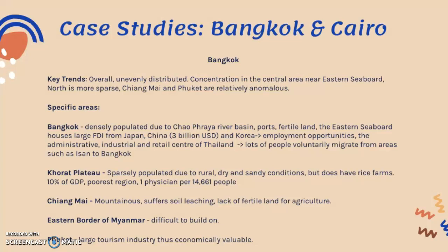Looking northeast of Thailand, you see the Khorat Plateau, which is sparsely populated due to its rural, dry, and sandy conditions. Although it does have rice farms, these provide a low income compared to the tertiary sector jobs found in Bangkok. The region houses only 10% of Thailand's GDP, is known as the poorest region of the country, and has one physician per 14,661 people — indicating low standards of living.